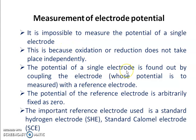The potential of a single electrode is found out by coupling it with a reference electrode. If you want to find out the potential of an electrode, you have to connect it to a reference electrode. The potential of this reference electrode is arbitrarily fixed as zero. The unit of electrode potential is voltage.